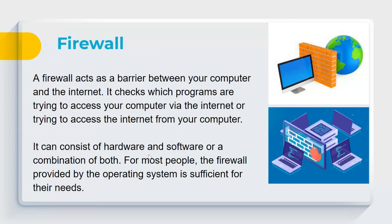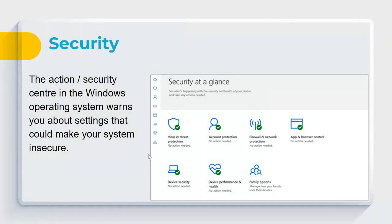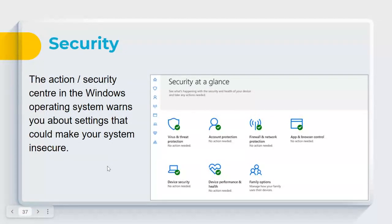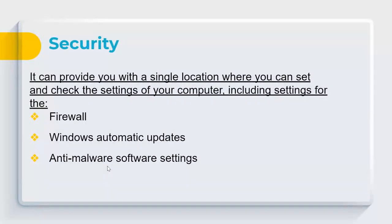For most home users, the OS's built-in firewall is sufficient, but networked environments require something more sophisticated. The Windows Action Security Center warns you about settings that could make your system insecure. Microsoft includes Windows Defender for antivirus and threat protection, with built-in firewall support. You can also purchase third-party antivirus software that integrates with the system, providing quarantine, scanning, and a single location to check all your security settings.